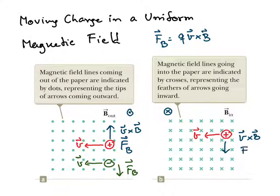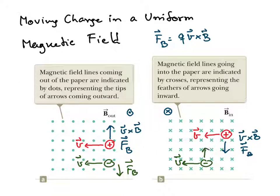If the charge is positive, the magnetic force F_B also points downward. But if the charge is negative, F_B will point upward.